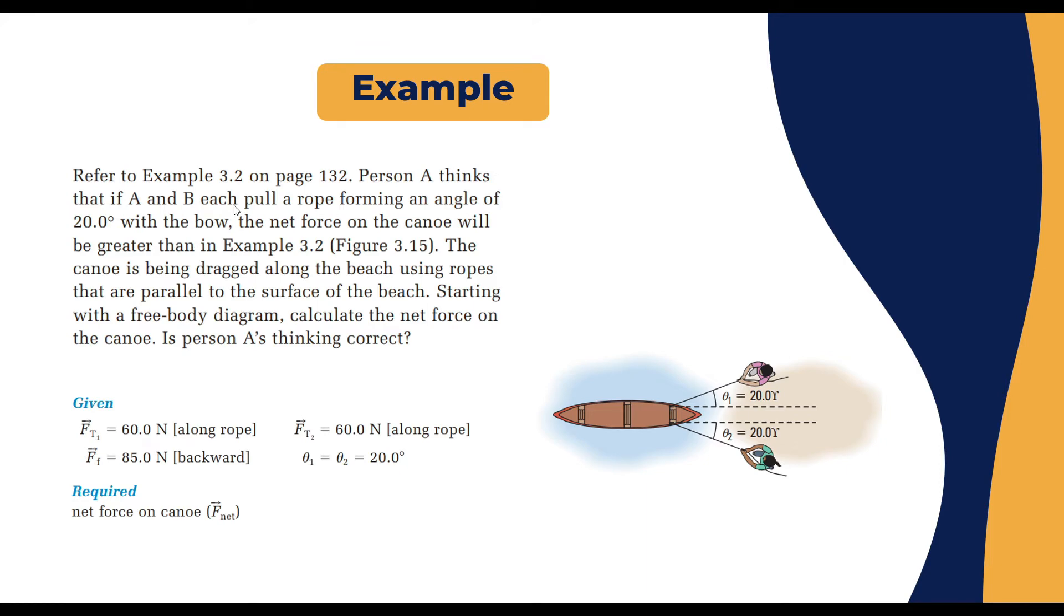We have here a person A thinks that if A and B each pull a rope forming an angle of 20 degrees with the bow, the net force on the canoe will be greater than in the previous example we got in our last lecture. The canoe is being dragged along the beach using ropes that are parallel to the surface of the beach. Starting with a free body diagram, we need to calculate the net force on the canoe. Is person A's thinking correct?